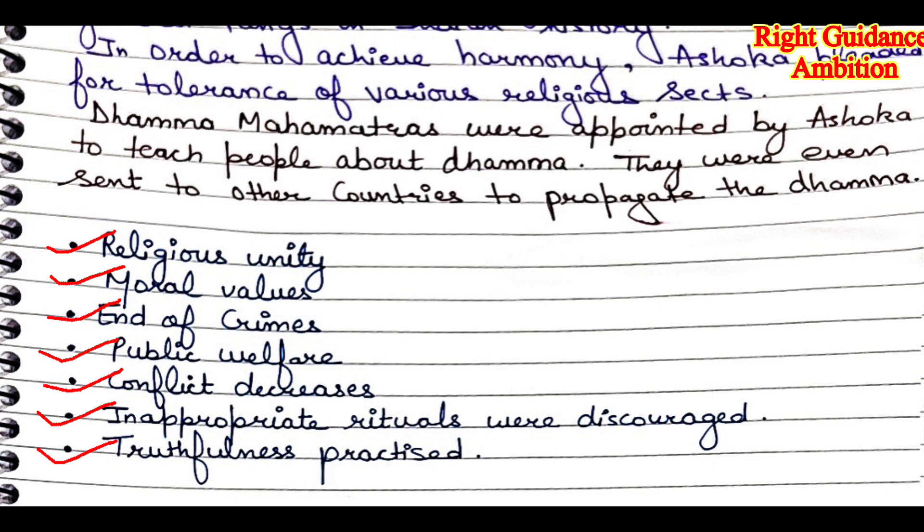The positive outcomes of Dhamma were: first, religious unity — people of different cultures were united. Second, moral values — a clear sense of right and wrong was established. Third, end of crime — the crime rate was reduced. Fourth, public welfare — many welfare policies were made for people. Fifth, conflicts decreased — clashes and wars among people were reduced. Sixth, inappropriate rituals were discouraged. Seventh, truthfulness was practiced — people walked the path of truth and lived simple and pure lives.